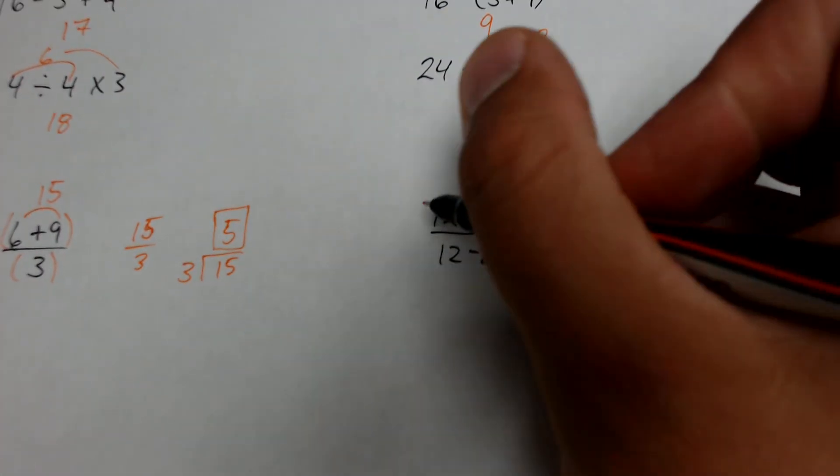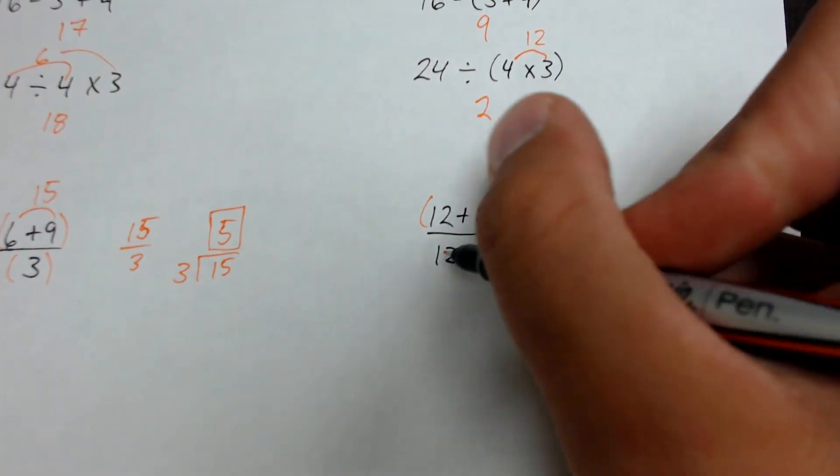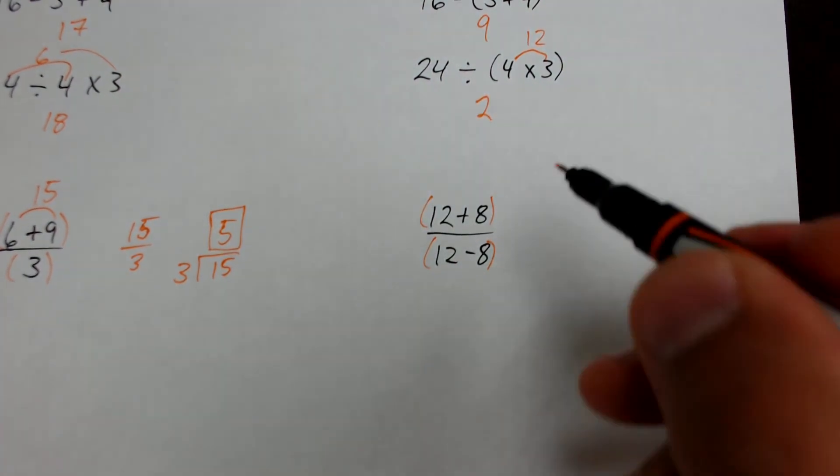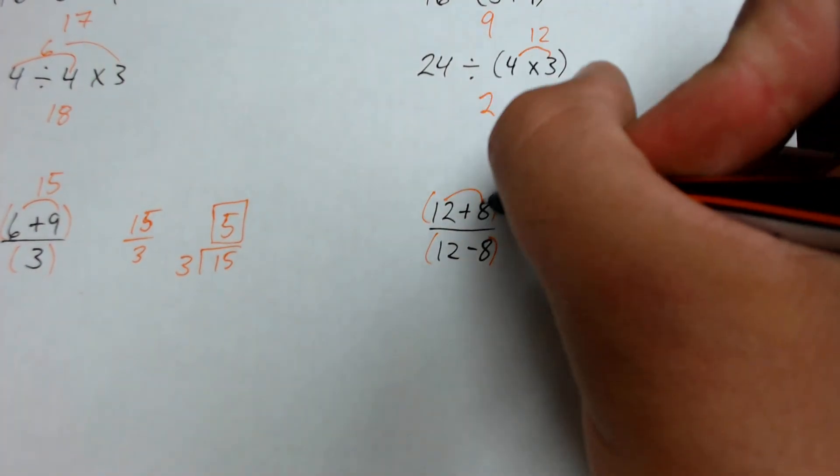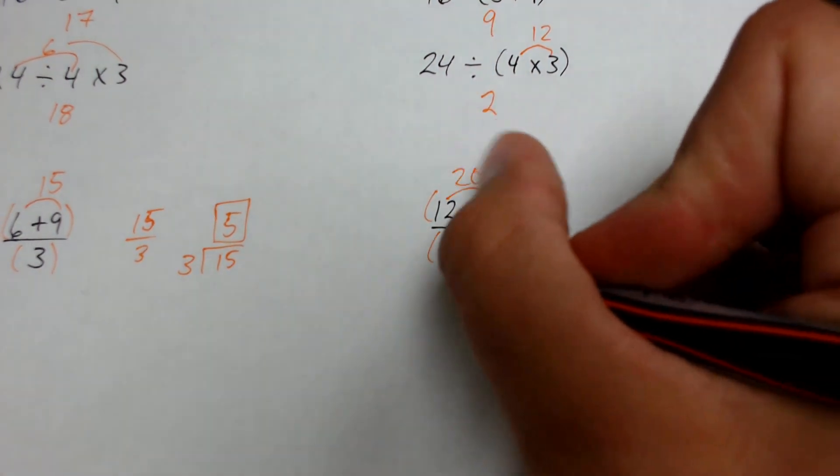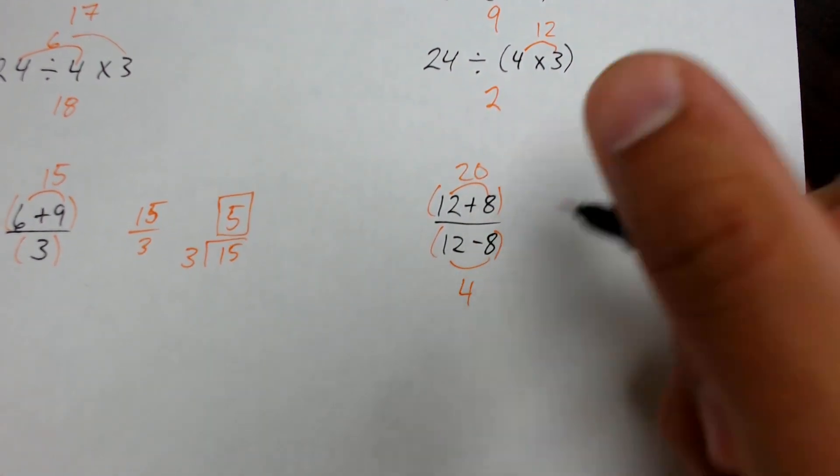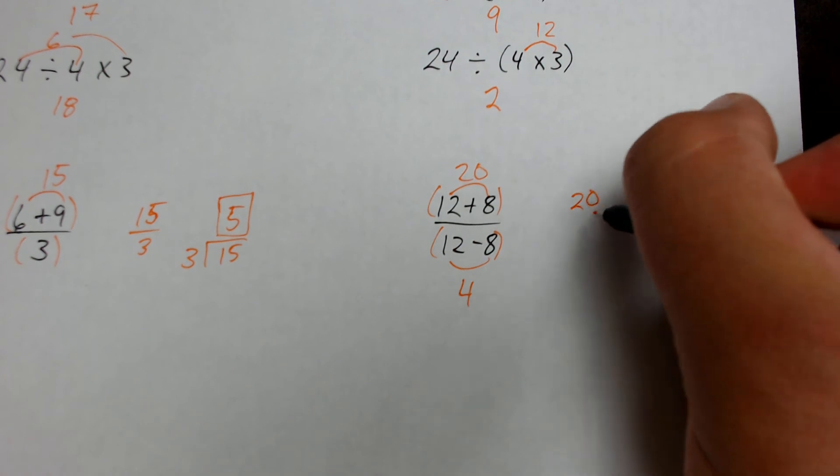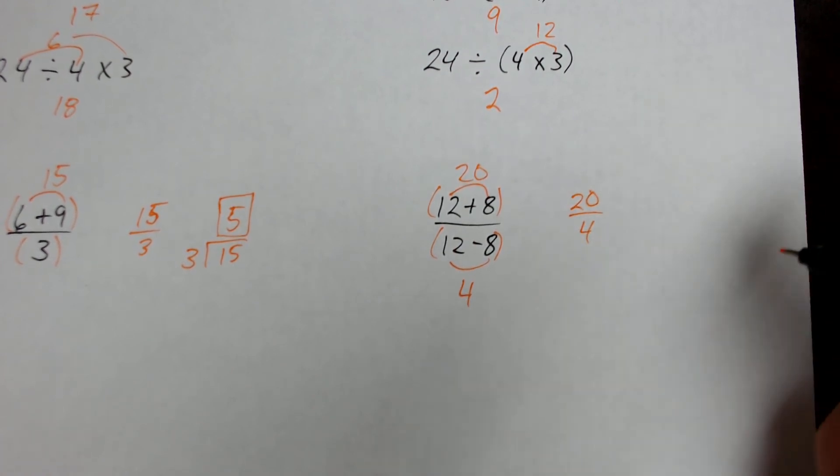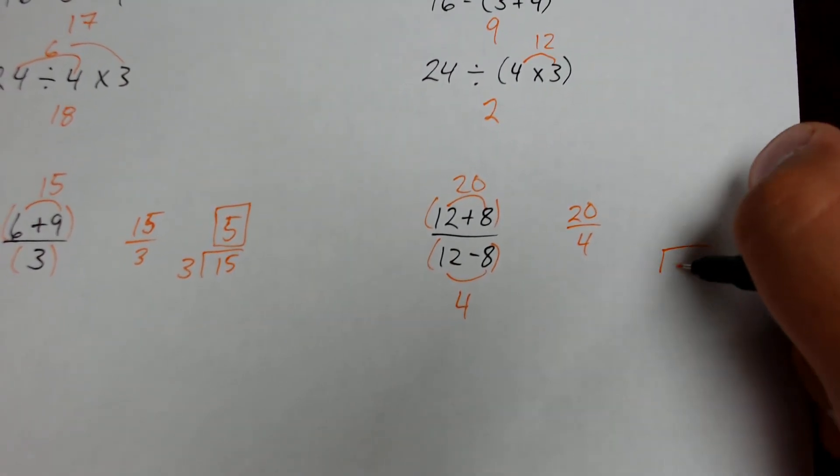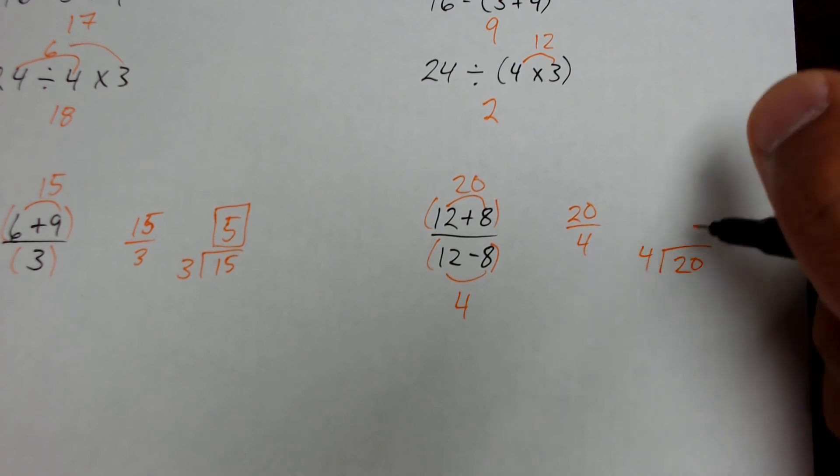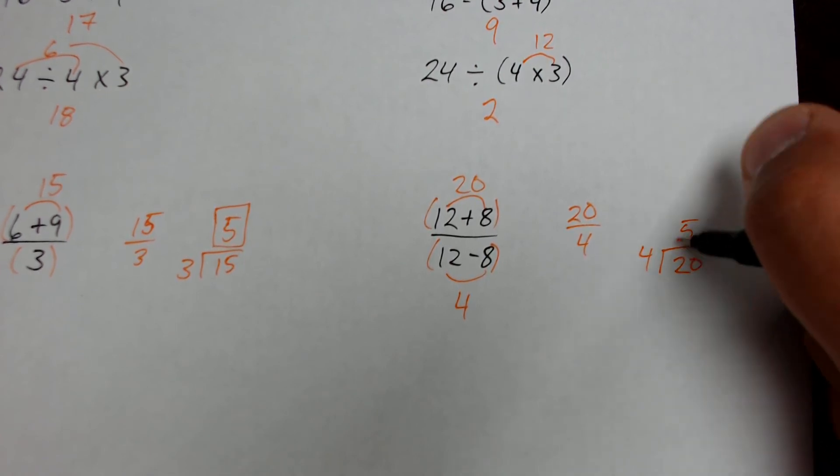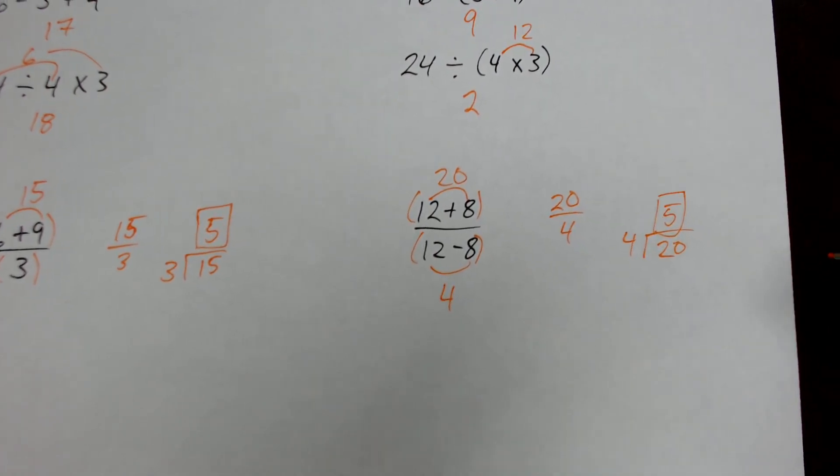Now this one, same thing. I'll go ahead and insert some parentheses or brackets into the problem. 12 plus 8 gives me 20. Down here, 12 minus 8 gives me 4. So now my division problem reads as 20 divided by 4. And I should know that 4 goes into 20 5 times as well. So here my answer is also 5.